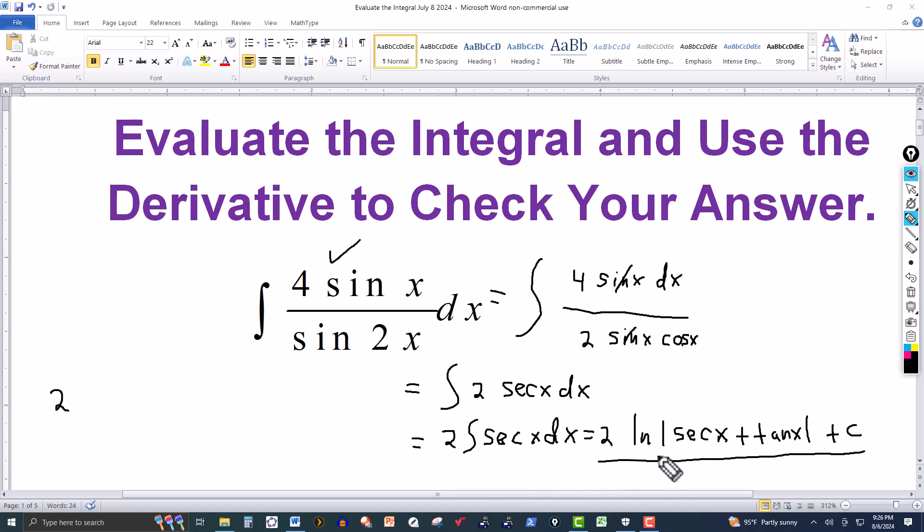And then the derivative of a natural log of this expression here is just going to be what we have in the denominator. So that'll be secant of x plus tangent of x. And that is the derivative of this expression here, secant x plus tangent of x.